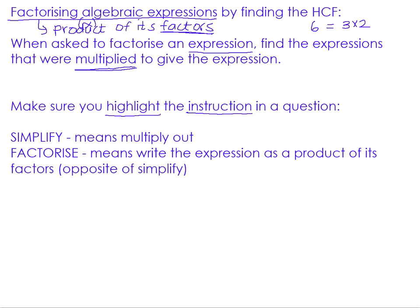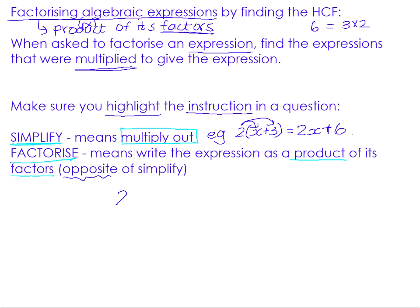The two basic instructions you will come across are simplify and factorize. To simplify means you must multiply out — you take the expression and multiply it out using the distributive law. For example, if you had two times x plus three and were asked to simplify, you'd multiply out the brackets. If you are asked to factorize, that means you must write the expression as a product of its factors. So if you've got 2x plus 6, you're saying it came from 2 times x plus 3.